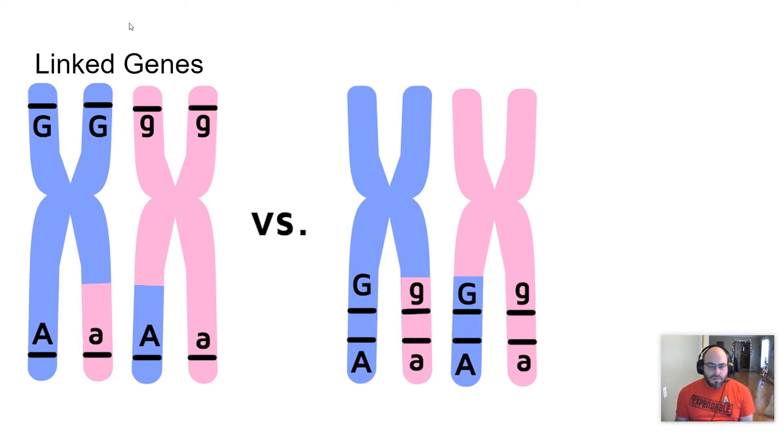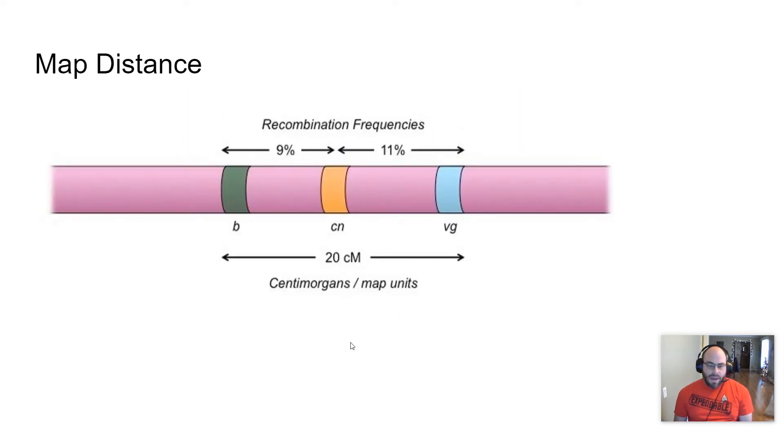This has something to do with map distance. I'll talk about map distance in a second. G and A are linked because they're on the same chromosome, but in this picture here, this G and A are a lot less linked than this G and A because the chance of there being a crossing over event between this G and A is a lot greater than between this G and A, and that's that idea of map distance.